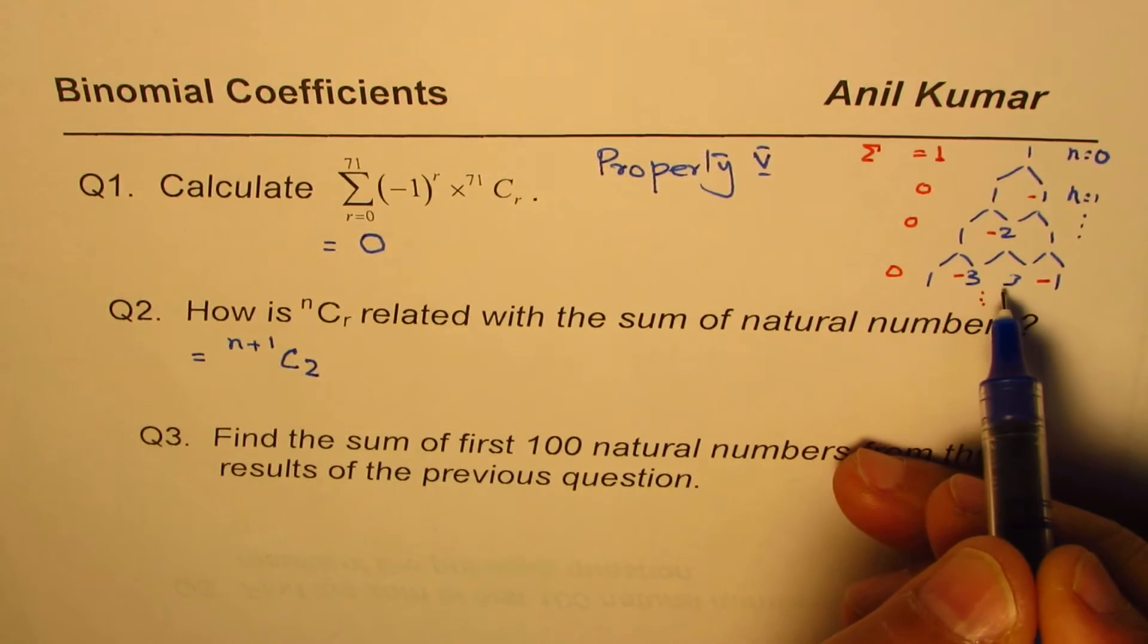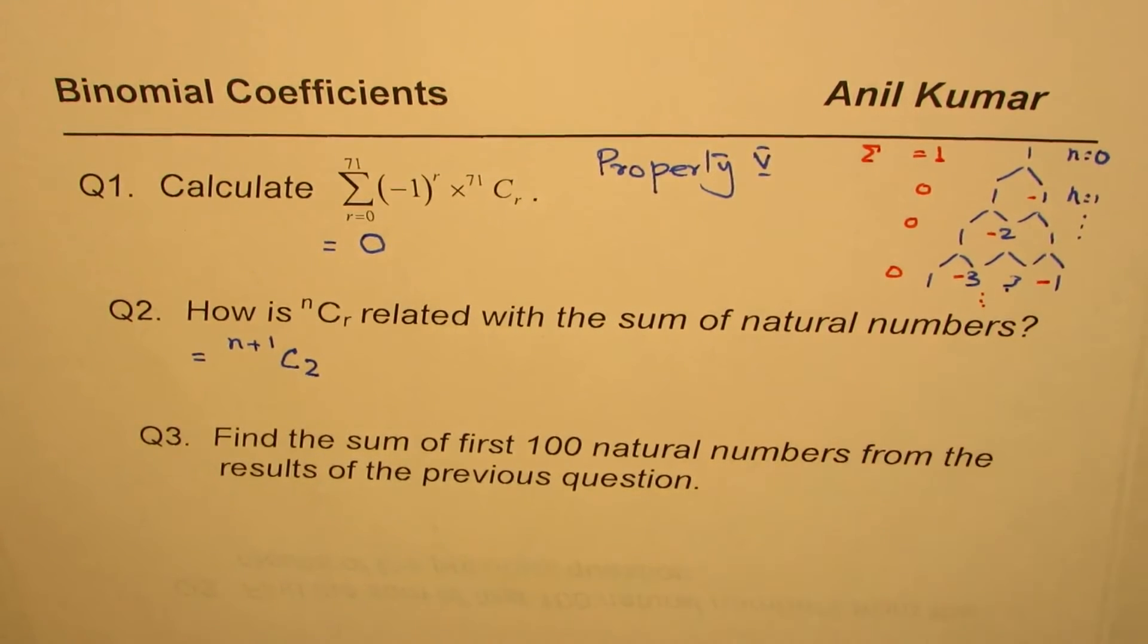So this is 0, 1, 2. That gives you, this series gives you the sum of natural numbers, if you see.